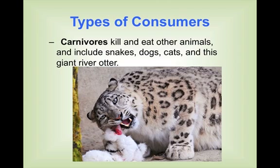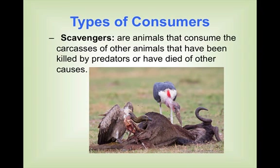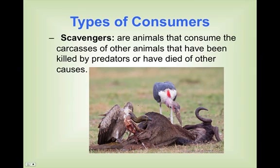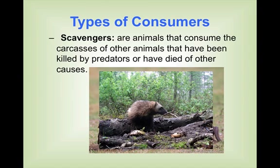There are different types of consumers. First, carnivores — they kill and eat animals. Here we see a snow leopard that has caught what looks like a snowshoe hare and is enjoying the meal after killing it. Scavengers are animals that consume the carcasses of other animals that have been killed by predators or died of other causes — like a vulture eating the carcass of a water buffalo. A wolverine brings up an interesting case: wolverines will scavenge when available but are also capable of killing, making them both carnivore and scavenger. A carnivore catches and kills, while a scavenger is simply eating something that has already died.